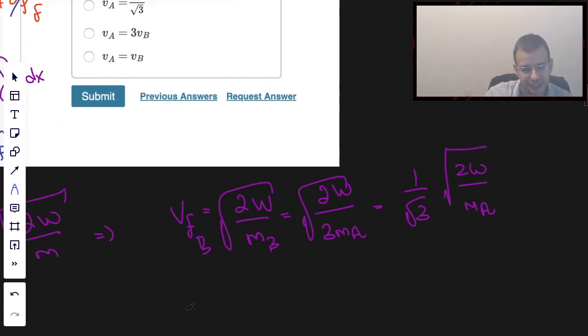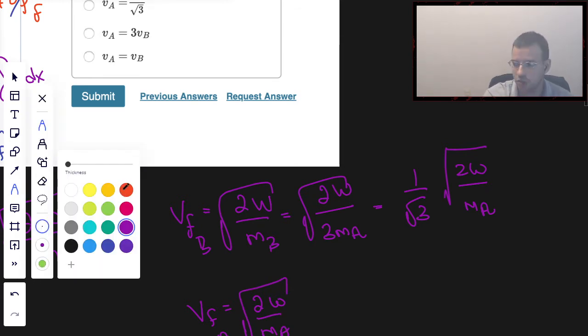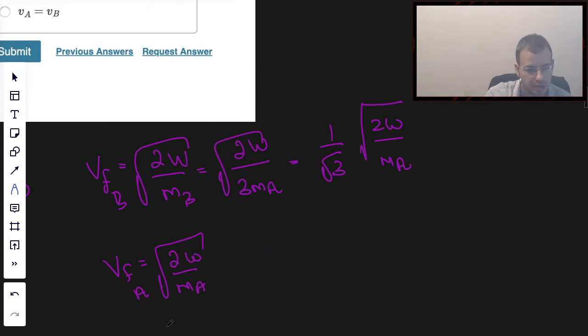So if we rewrite this, if we look at V final of A, that's going to be 2W over mass A, square rooted. We can look at these two and see that this is the same as that. So V final B equals 1 over square root of 3, V final A.